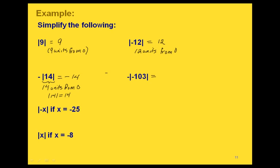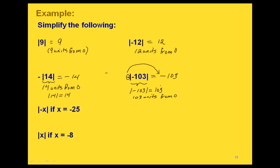Now here we have a negative on the outside and also a negative on the inside. Let's think first about the absolute value of negative 103: this would be 103 units from zero, so its absolute value is positive 103. Now we take the negative that was on the outside — it doesn't get affected by the absolute value bars. So we have negative times 103, giving us a final answer of negative 103.